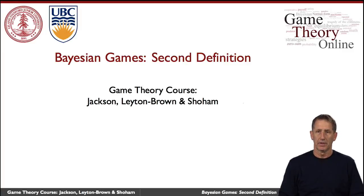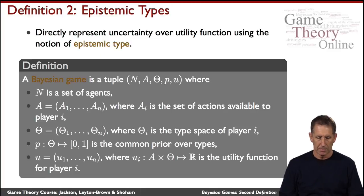Here is an alternative definition of Bayesian games that is essentially identical mathematically, but presented differently. It's based on types, or more fully epistemic types.